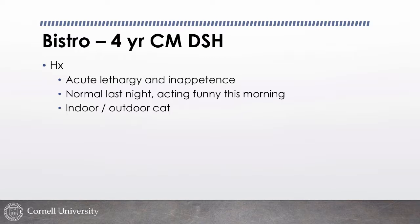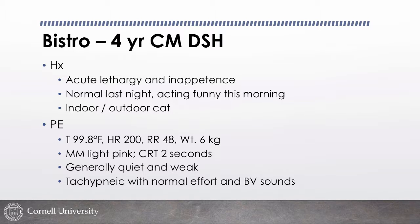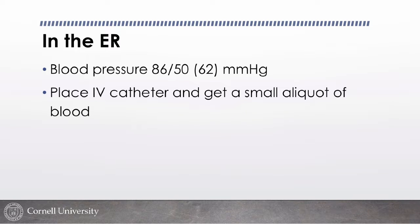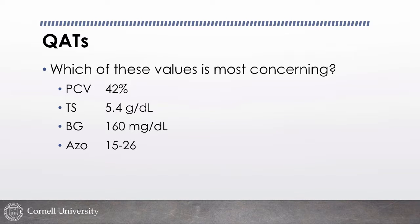Case one: Bistro is a four-year-old castrated male domestic shorthair presented for acute lethargy and inappetence. Owners report he was normal last night and not himself this morning. He's an indoor-outdoor cat. On physical exam: temperature 99.8°F, heart rate 200, respiratory rate 48, weight about 6 kg. Mucous membranes are light pink, CRT about 2 seconds. He is quiet and weak, tachypneic with normal effort and normal bronchovesicular sounds. Blood pressure has a mean of 62 — a little low.